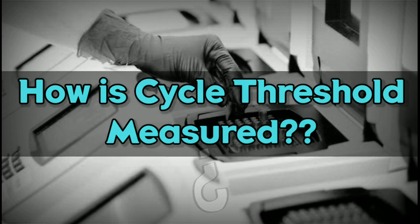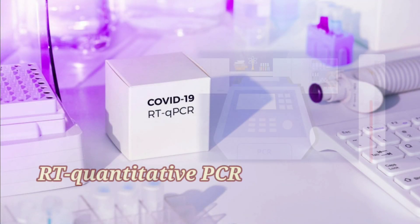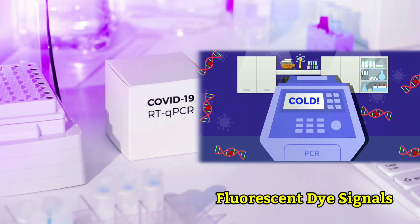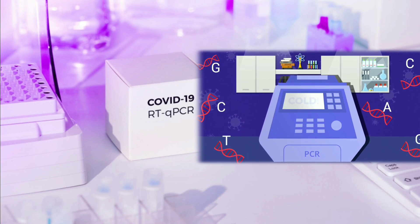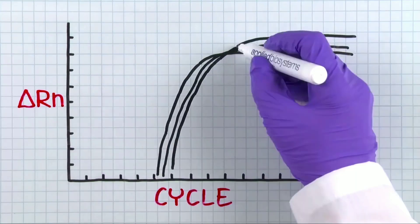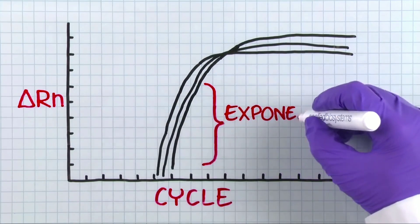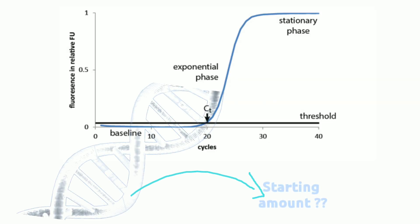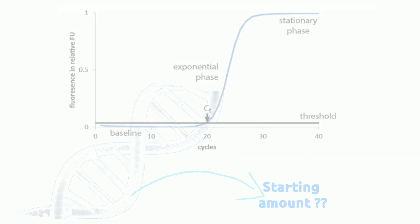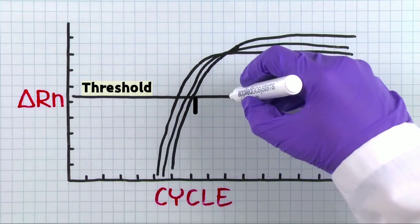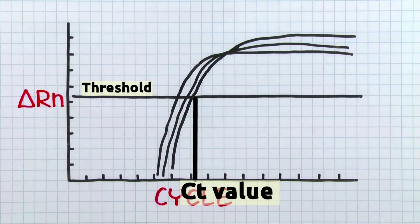How is cycle threshold measured? In qPCR, DNA amplification is measured in real-time by fluorescent dye signals, and this is crucial since it allows us to calculate CT values. The graph is plotted between fluorescence and the number of cycles. Fluorescence signals collected in the exponential phase are noted — this gives us information on the starting amount of target DNA. The threshold line is marked in the exponential phase, and at the intersection when we drop down to the x-axis, we get the CT value.